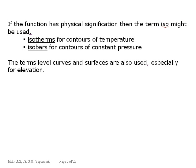If the function has physical significance like temperature or pressure, then often you use iso for the contours. Isotherms are contours of temperature, iso meaning the same. This would be a line showing all the points, or a set of points, where the temperature has the same value. In pressure, they're called isobars.